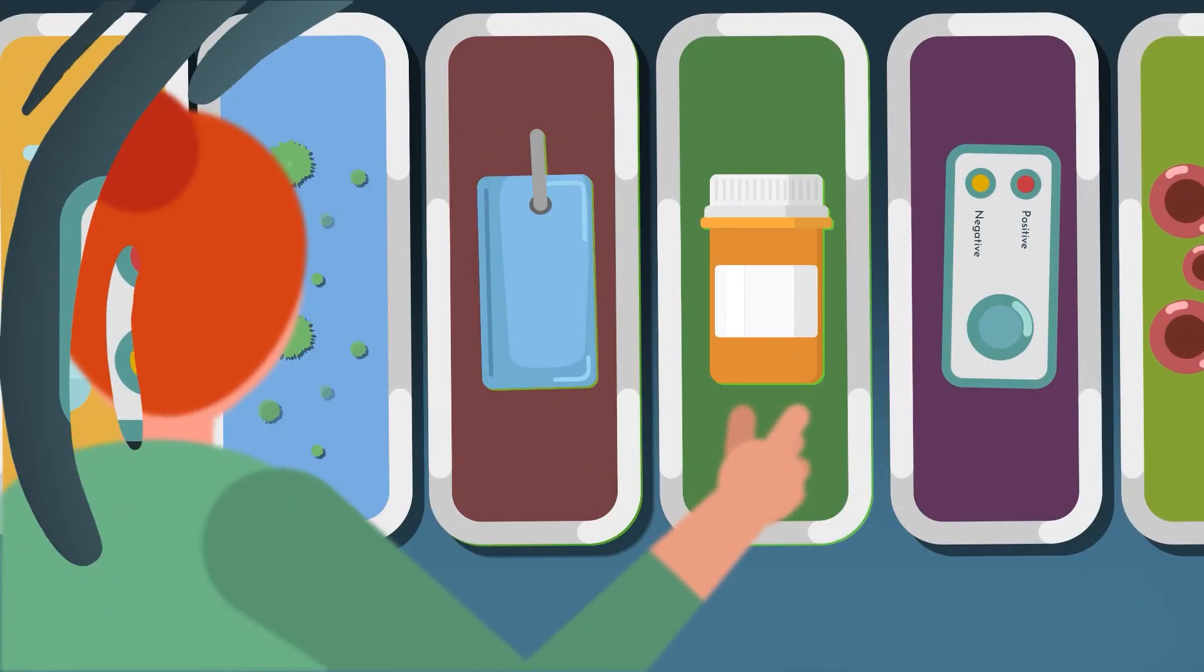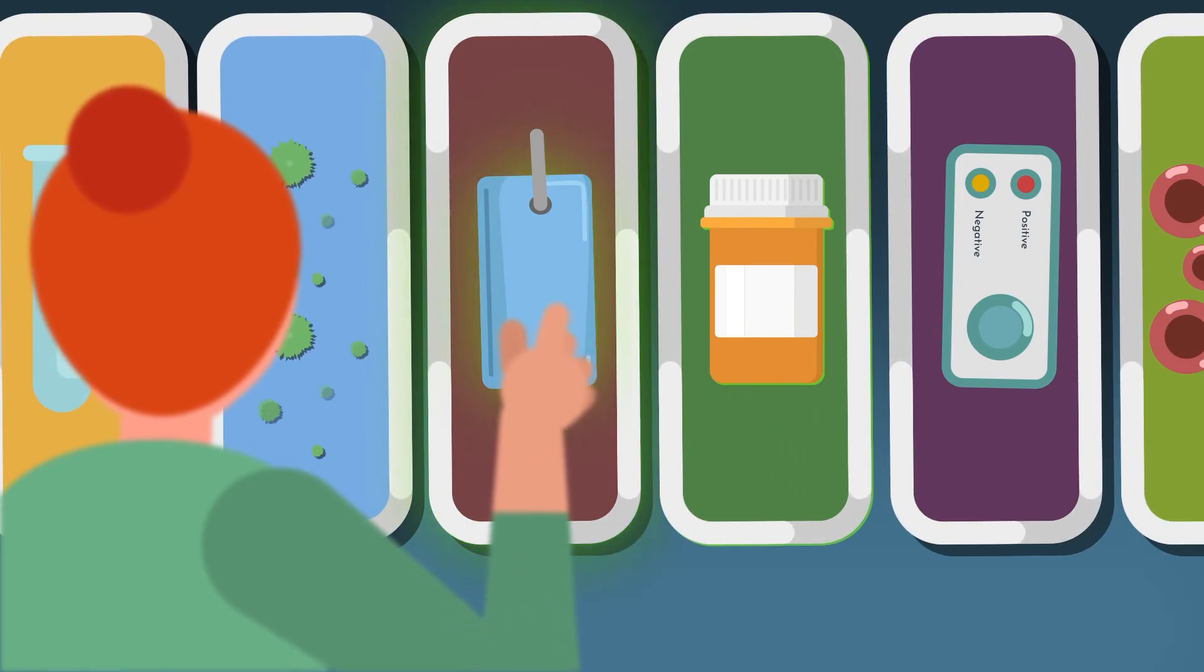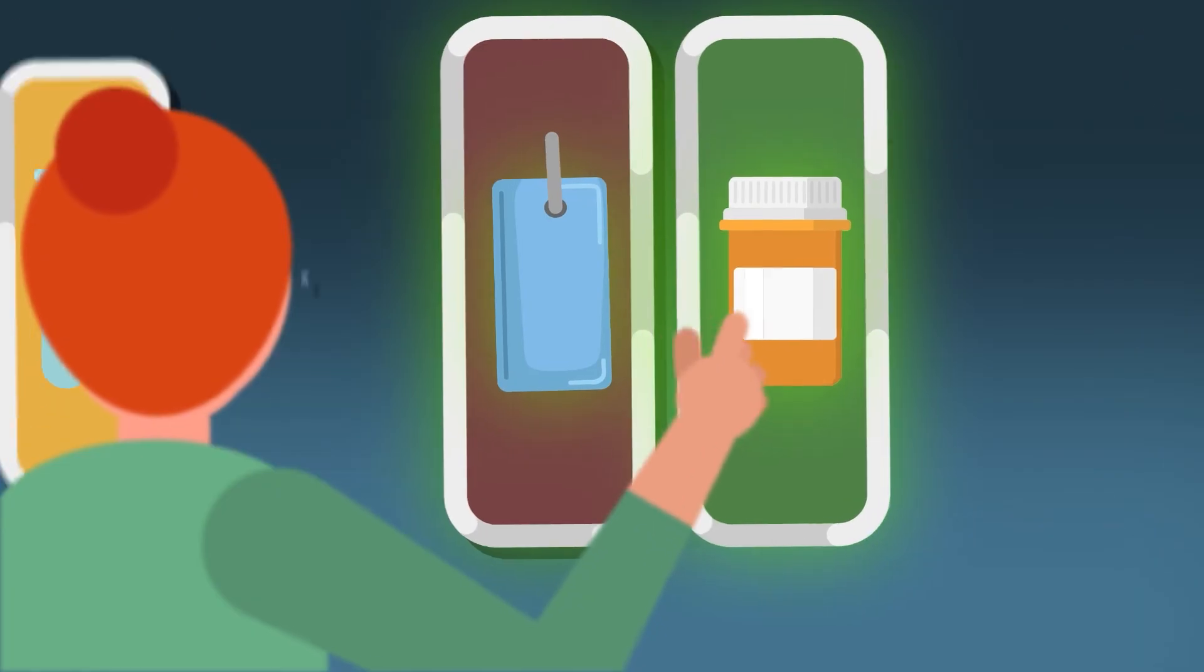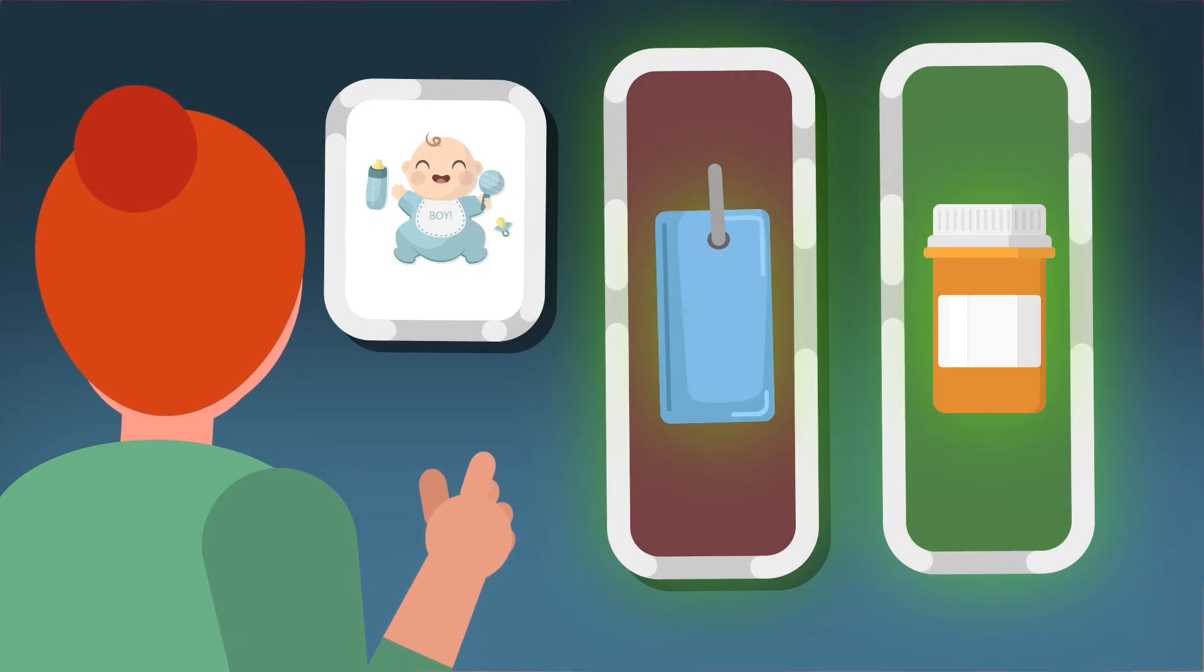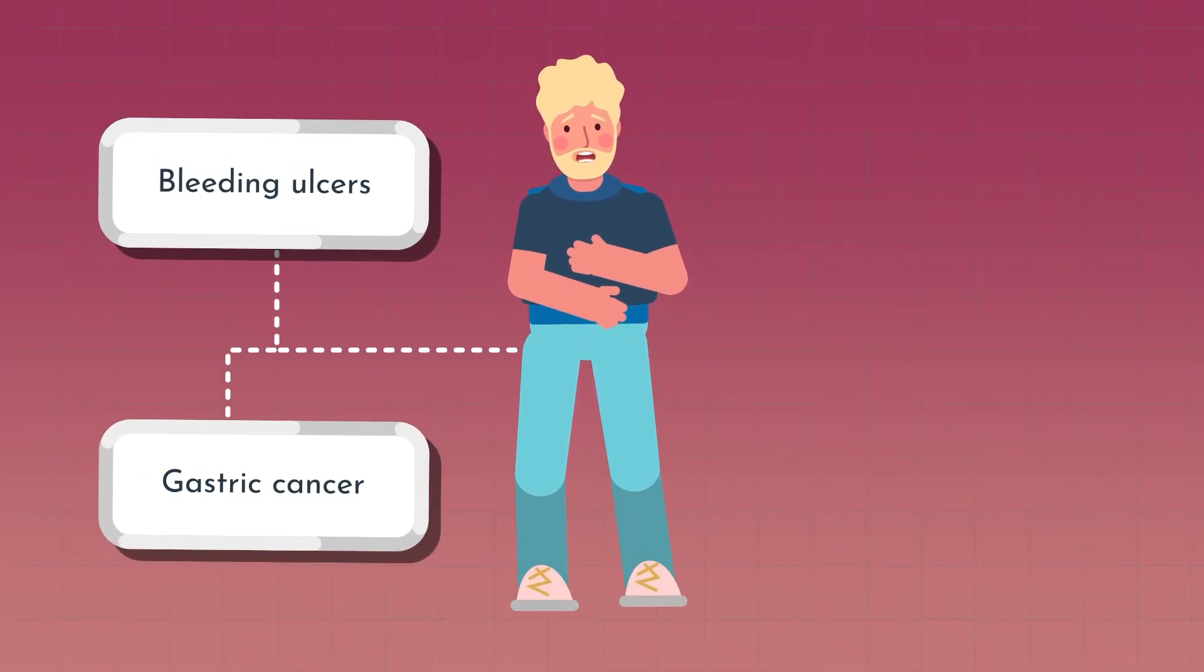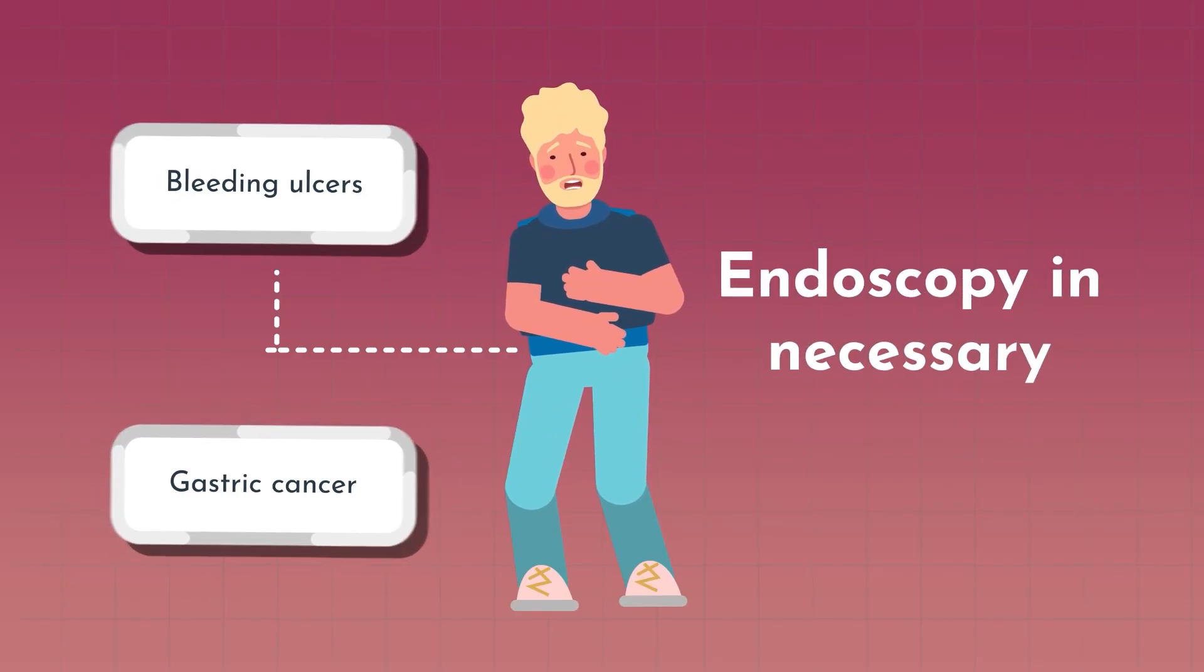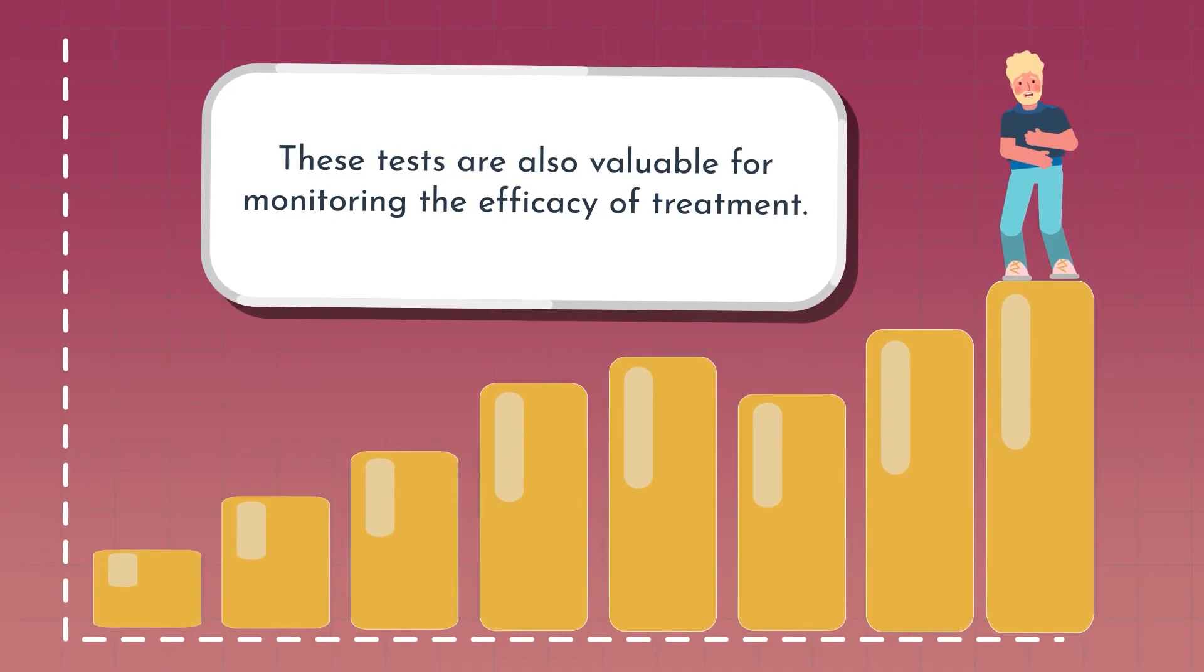Choosing the right diagnostic test depends on the patient's symptoms and history. The urea breath test and stool antigen test are excellent for non-severe cases, especially in pediatric patients. For suspected severe conditions, like bleeding ulcers or gastric cancer, endoscopy is necessary. These tests are also valuable for monitoring treatment efficacy.